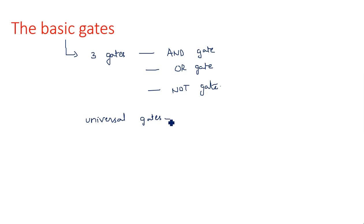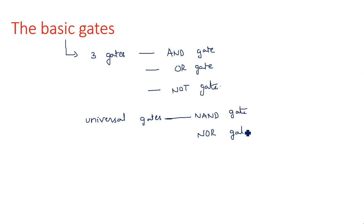The two universal gates are NAND gate and NOR gate. These are the universal gates. And then there are exclusive gates — again, two gates are there.